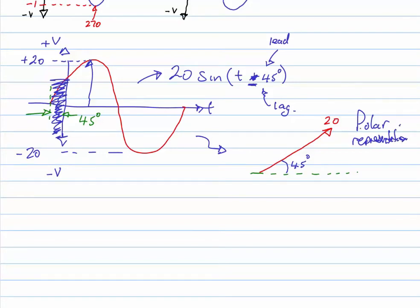And what we can do with this polar representation is we can say if I complete the triangle like so, I have this triangle here and I can work out what is the vertical component.